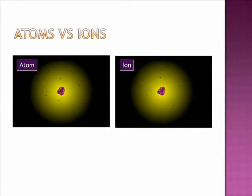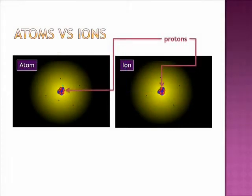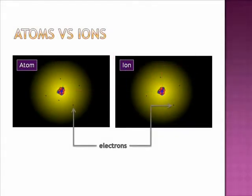Atoms vs. Ions. On the left hand side of the screen you will see an image of an atom, and on the right hand side is an image of an ion. In both cases, the blue dots represent the neutrons, the pink dots represent the protons, and the black specks represent the electrons.